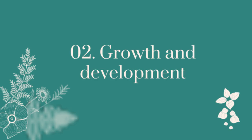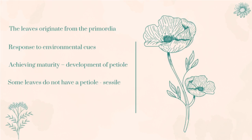Now we are going to move towards discussing the growth and development of leaves. The leaves of a plant originate as primordia in the buds. Regardless of the size of the leaf or its form, they all begin from the buds. When the leaf is in its primordia stage it has less than 200 cells. During this stage they are also beginning to become more responsive towards environmental cues such as temperature, sunlight, availability of water, and plant hormones.